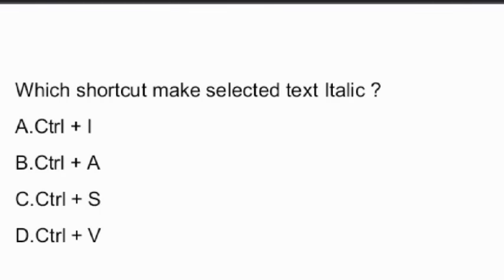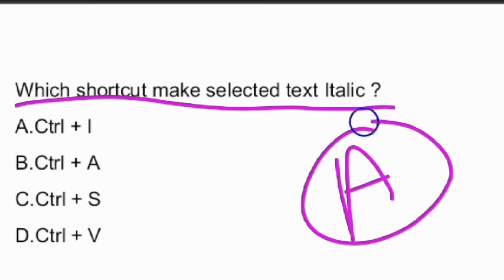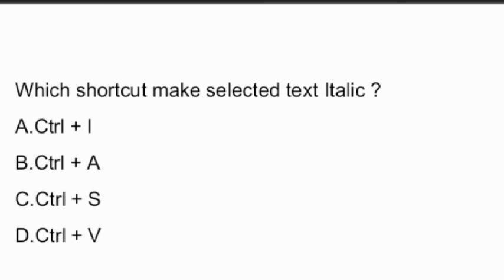Next question: which shortcut makes selected text italic? The answer is option A, Ctrl+I — Ctrl+I is the shortcut key to make selected text italic.